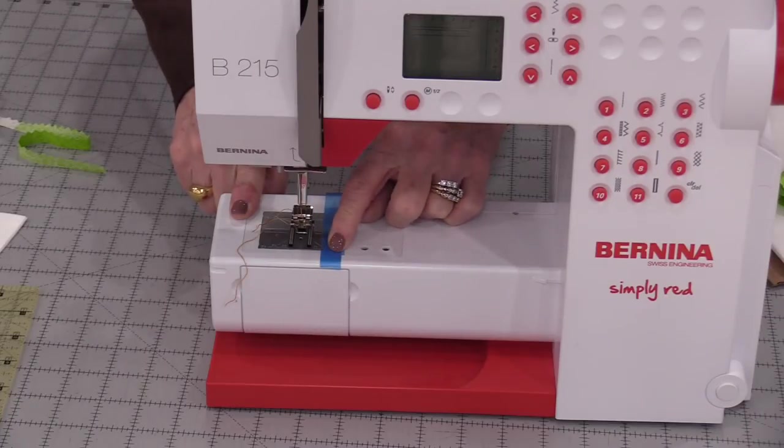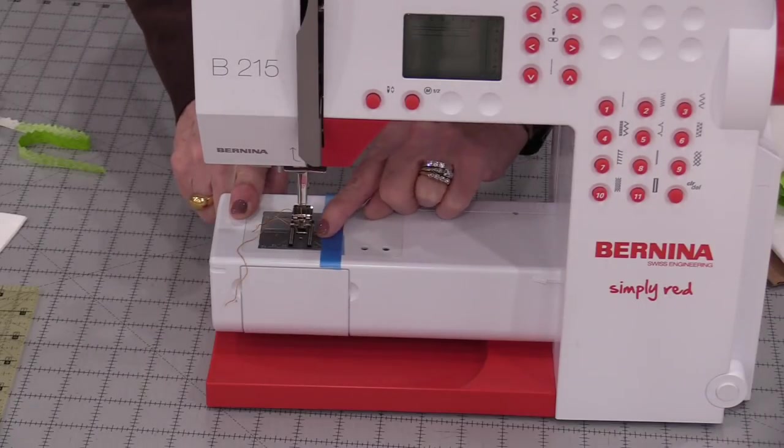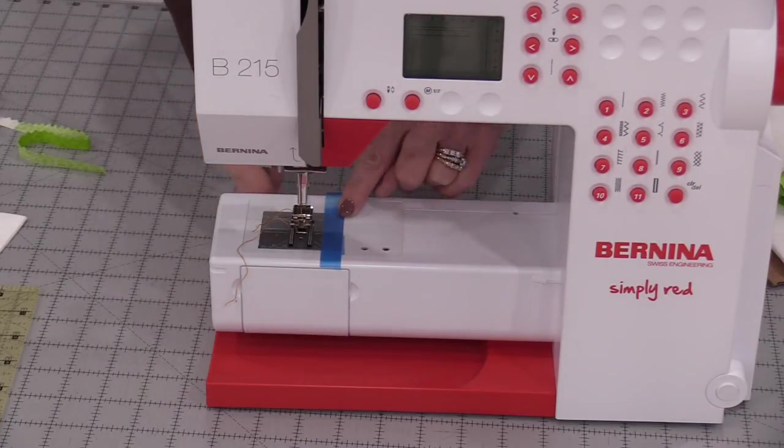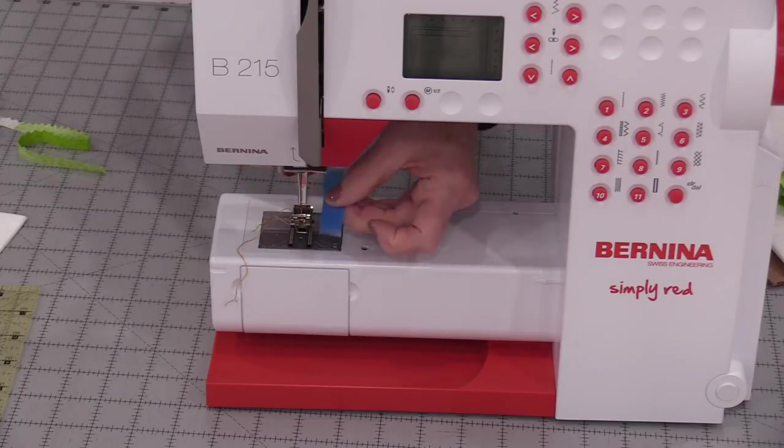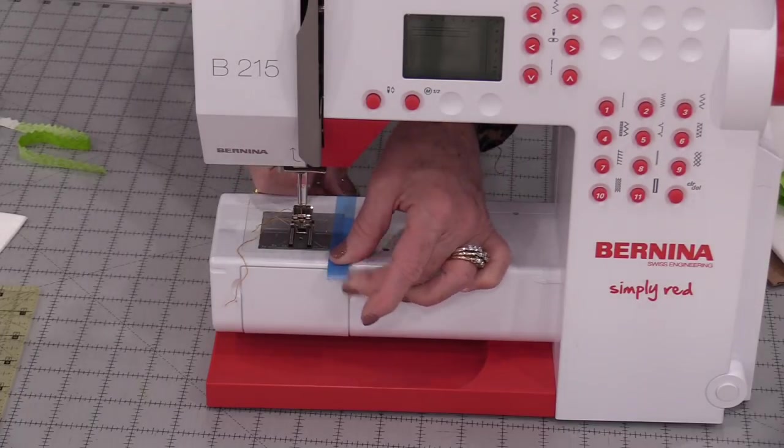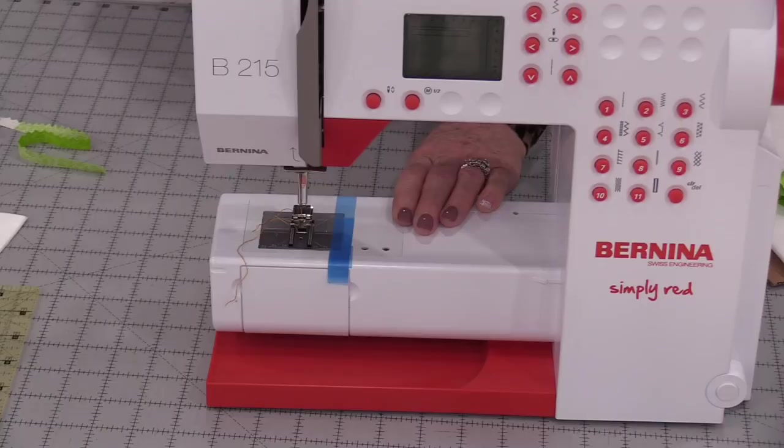We can also use this on our sewing machines. If we want to have a certain seam allowance we can put that tape there and we can build it up. It does remove easily so we can put it wherever we need.